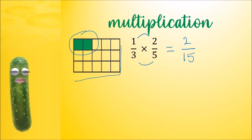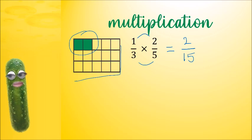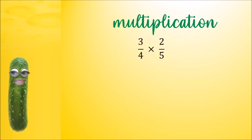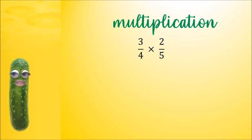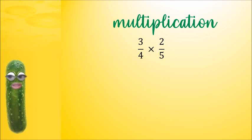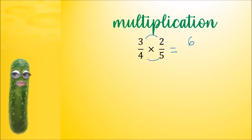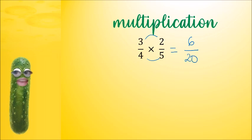So all we have to do to multiply fractions is multiply the tops and multiply the bottoms. Let's have a look at this problem: 3 quarters times 2 fifths. Let's use our method — multiply the top: 3 times 2 is 6, and multiply the bottom: 4 times 5 is 20, to get our answer.